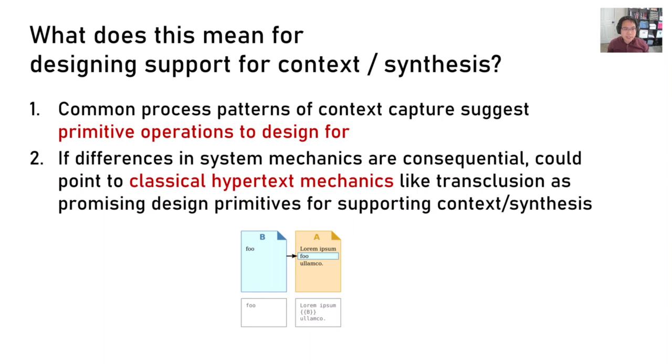Secondly, we think that the differences in system mechanics can be usefully described under the umbrella of hypertext mechanics like transclusion. If these differences in mechanics turn out to be consequential, these hypertext mechanics might be promising design primitives to design with.